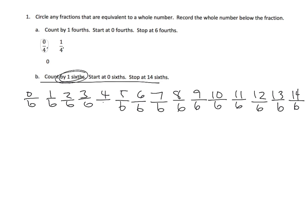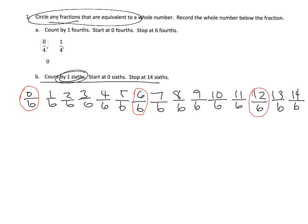Then it said we were supposed to circle any fractions that are equivalent to one whole. So you could say six-sixths is a whole. And we could actually say zero-sixths because zero is a whole number. So zero-sixths, six-sixths, twelve-sixths — there we go.